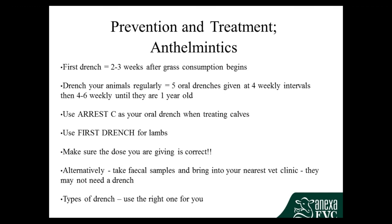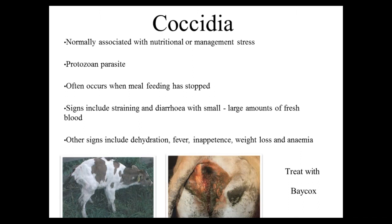Now onto coccidia, which is what we call a protozoan parasite. It's a very small cell that gets eaten from pasture and will invade into the cells of the intestine, basically hijacking them as factories to produce more copies of the protozoan. Once the cell is as full as it can get, they rupture out and move on to the next cell, causing quite significant damage to the intestine, which is what causes the clinical signs.